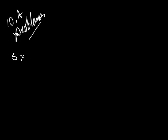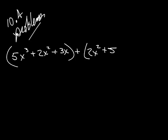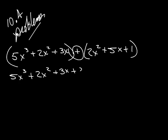They have 5x cubed plus 2x squared plus 3x, and we're adding 2x squared plus 5x plus 1. Alright, so again, we have a plus sign, so we can just take off parentheses. We don't have to do anything to anything.